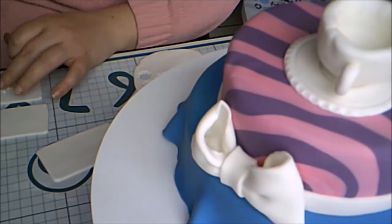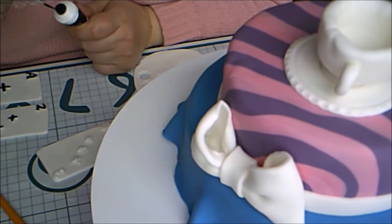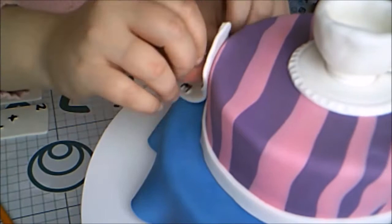Yes, I know, I should have used black. However, my black fondant was hard as a rock, so I decided to use white and paint it. I painted it with black food coloring straight from the bottle. And I placed them on one side of the cake.